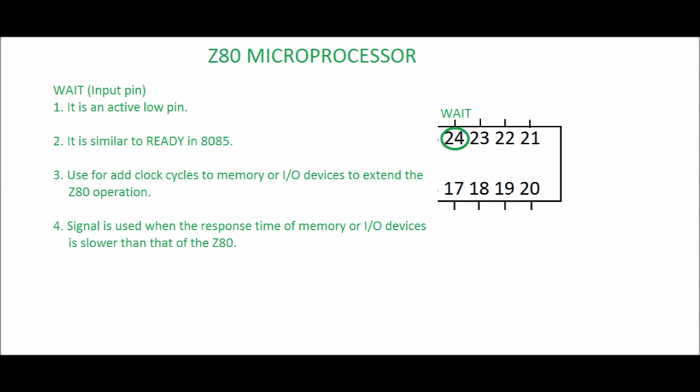Pin 24: WAIT. It is an input pin and an active low pin. It is similar to READY in 8085. It is used to add clock cycles to memory or I/O devices to extend the Z80 operation. When this signal goes low, it indicates to the microprocessor that the addressed memory or I/O device is slower than the Z80. This signal is used when the response time of memory or I/O devices is slower than that of the Z80.